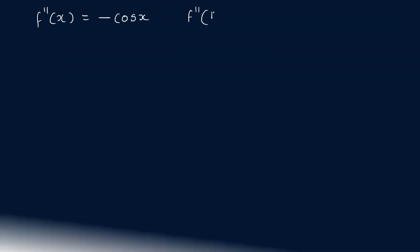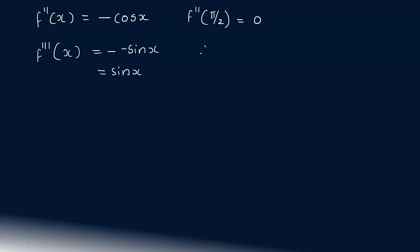For f'''(x): the derivative of −cos(x) is sin(x), so f'''(π/2) = sin(π/2) = 1.